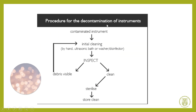Procedures used for the decontamination of instruments: contaminated instruments that have been used for patients must first go through initial cleaning — either by hand, ultrasonic bath, or washer-disinfector — then inspected. If clean, they are sterilized and stored. If not cleaned properly and debris are visible, the process goes back to initial cleaning, then inspection, then sterilization, and storage.